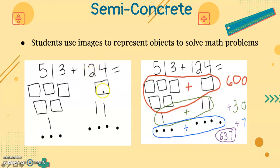For 124, we have one square for the 100 in 124 and two lines for the 20 in 124.